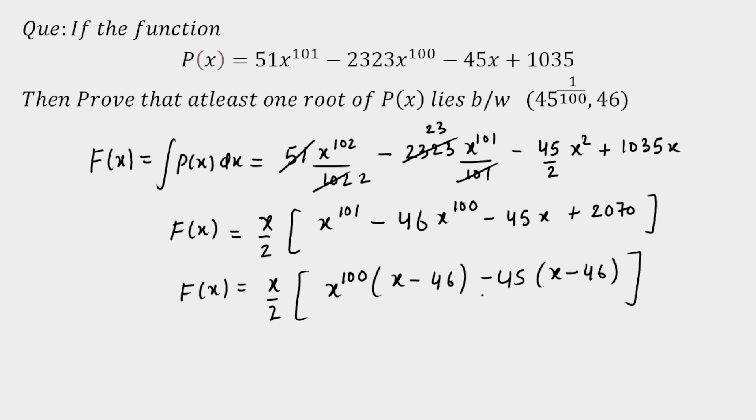Now throughout I think I can take something common here, so x/2 as it is here, multiplied by—I think we will get this as x^100 minus 45, and remaining is x minus 46 here. Now we got this as capital F(x).